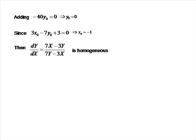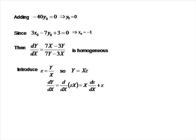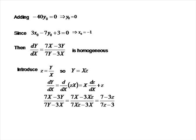To solve this homogeneous equation, we introduce a new variable Z equal to Y over X, which rearranges to Y equals X times Z. Then dY/dX, by the product rule, equals X times dZ/dX plus Z. The right-hand side can also be written in terms of X and Z: replacing Y with X times Z gives 7X minus 3XZ on top and 7XZ minus 3X on the bottom. There is a common factor of X that cancels top and bottom, leaving 7 minus 3Z all over 7Z minus 3.